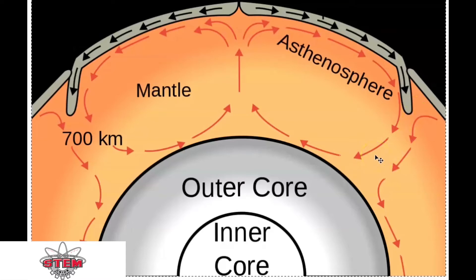Convection currents work from one key property: heat moves from areas of higher temperature to areas of lower temperature. This happens because you are adding energy in the form of heat to the mantle. When you add energy, the particles become very excited and they spread out.